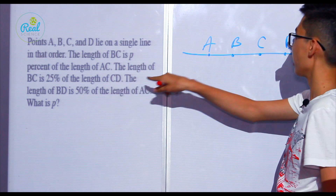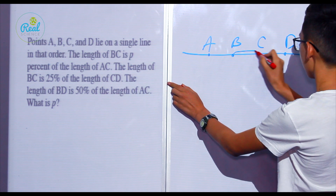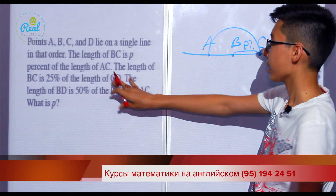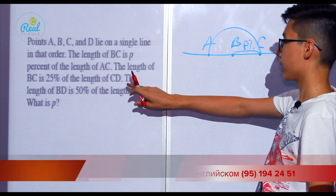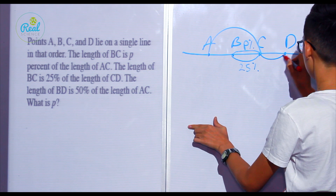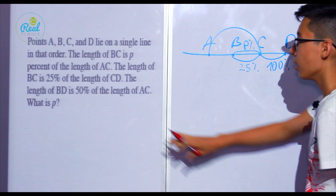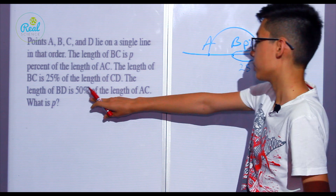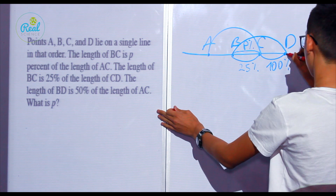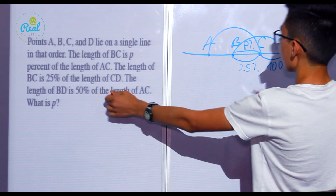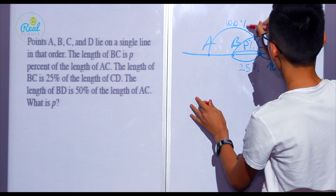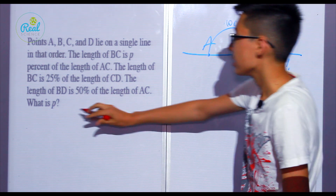The length of BC is P percent of the length of AC — so BC is P percent of AC. The length of BC is 25 percent of the length of CD — BC is 25 percent of CD. The length of BD is 50 percent of the length of AC — so BD is 50 percent of AC, meaning AC is 100 percent with respect to BD. We need to find P.